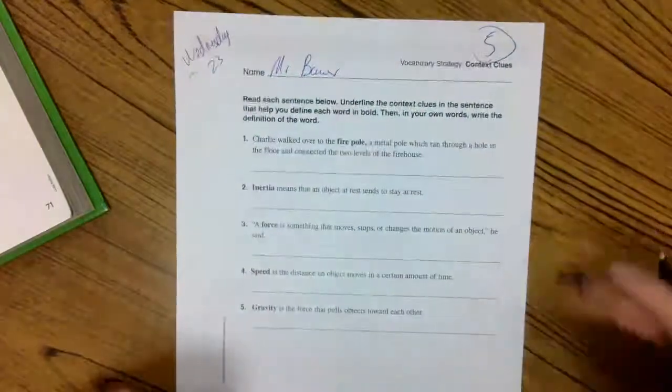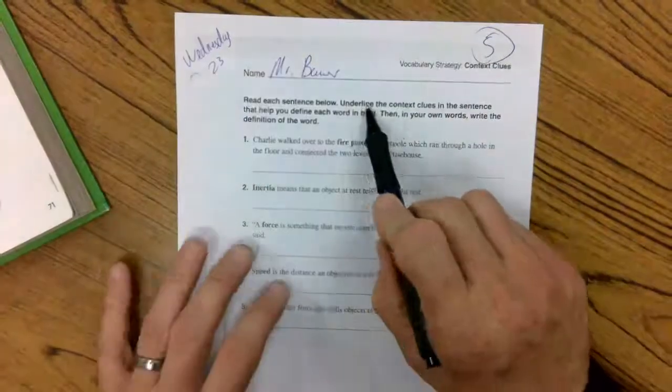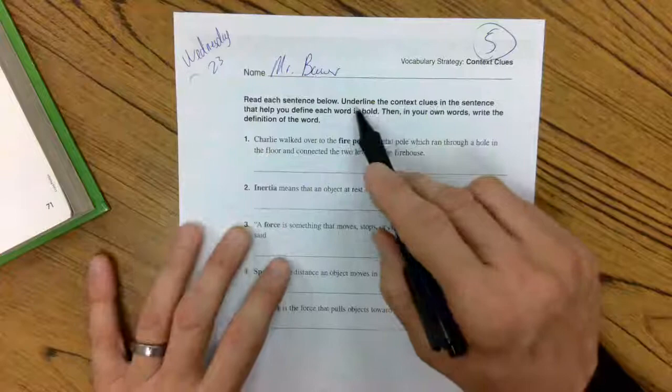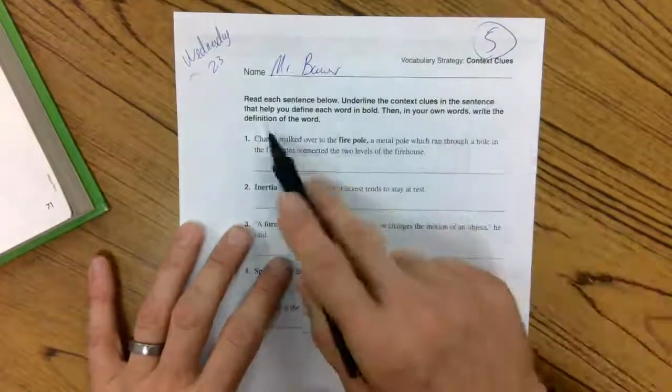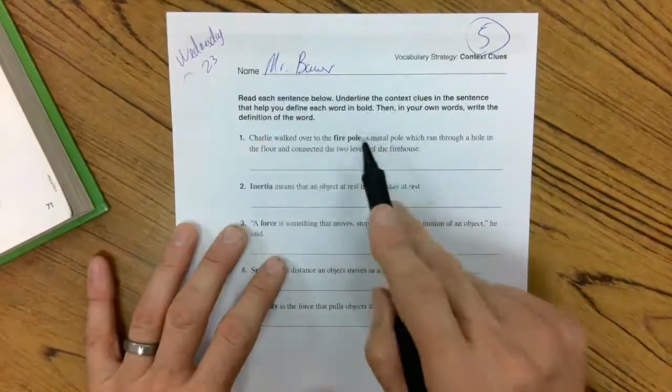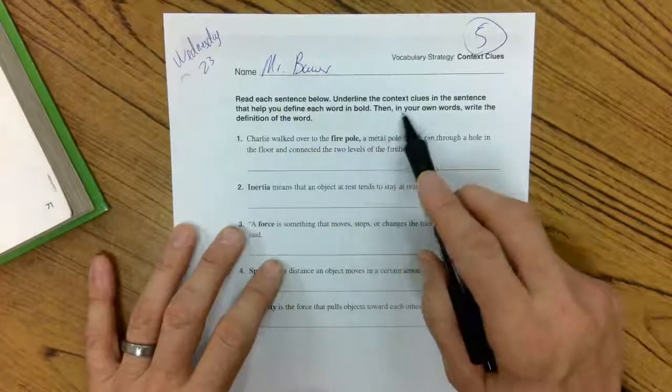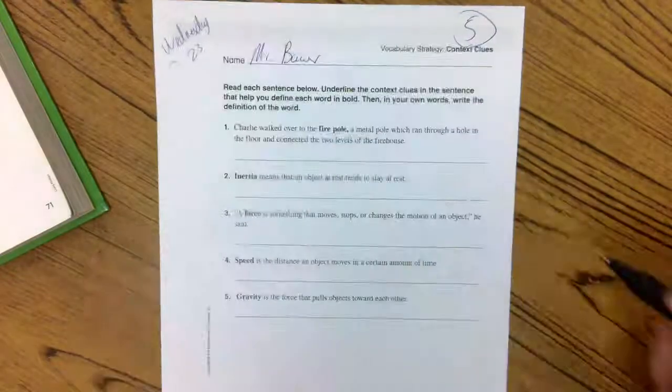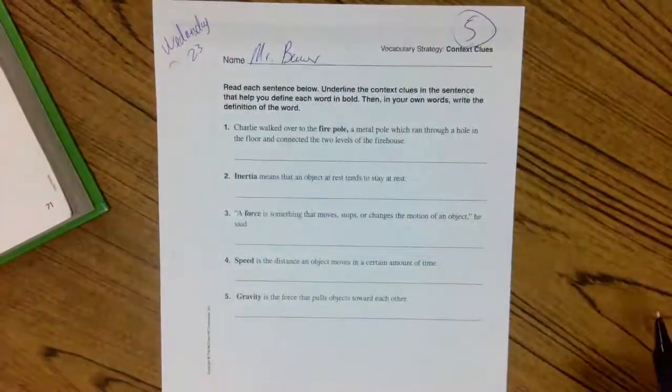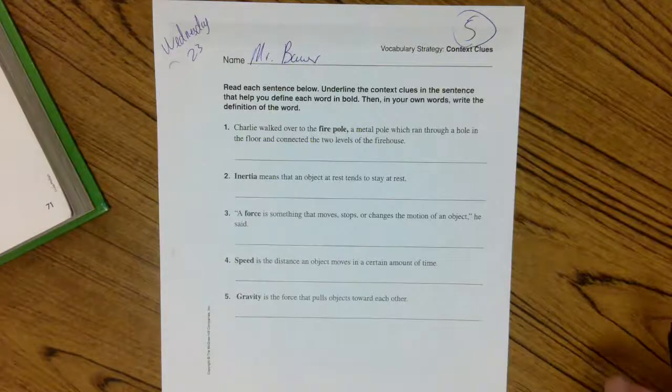All right, here comes our assignment. Read each sentence below, underline, I don't care if you circle them either. Underline or circle the context clues in the sentence that help you define each word in bold. Then, in your own words, write the definition of the word. So it's going to be in your own words, but you should be using the context clues to help you.